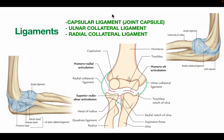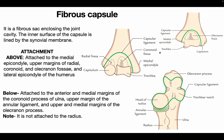Ligaments of the elbow joint: there are three main ligaments — the capsular ligament, also known as the joint capsule, the ulnar collateral ligament, and the radial collateral ligament. The fibrous capsule is a fibrous sac enclosing the joint cavity, and its inner surface is lined by the synovial membrane.